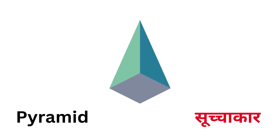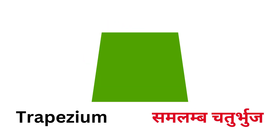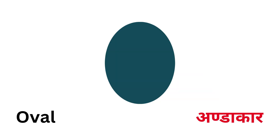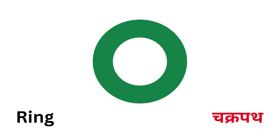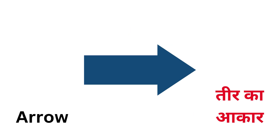Pyramid (Suchakar), Prism (Chhedit Ghangshetra), Trapezium (Samlamb Chaturbhuj), Trapezoid (Visham Chaturbhuj), Oval (Andakar), Ring (Chakrapat), Kite (Patank), Arrow (Teerka Aakar).